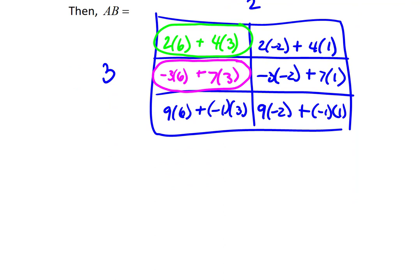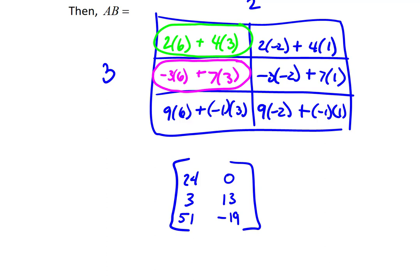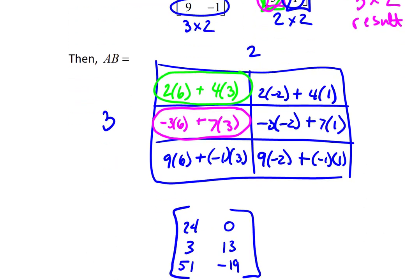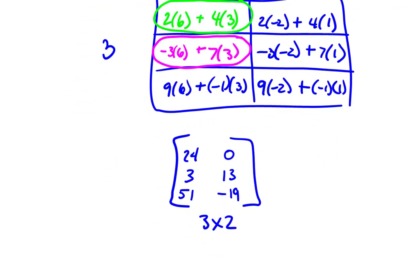Now we translate our rigid box back into a matrix — 3 rows and 2 columns. The top left entry: 2 times 6 plus 4 times 3 equals 12 plus 12, which is 24. Going through the rest of the entries correspondingly, our 3 by 2 result matrix reading across each row is: 24, 0, 3, 13, 51, negative 19.